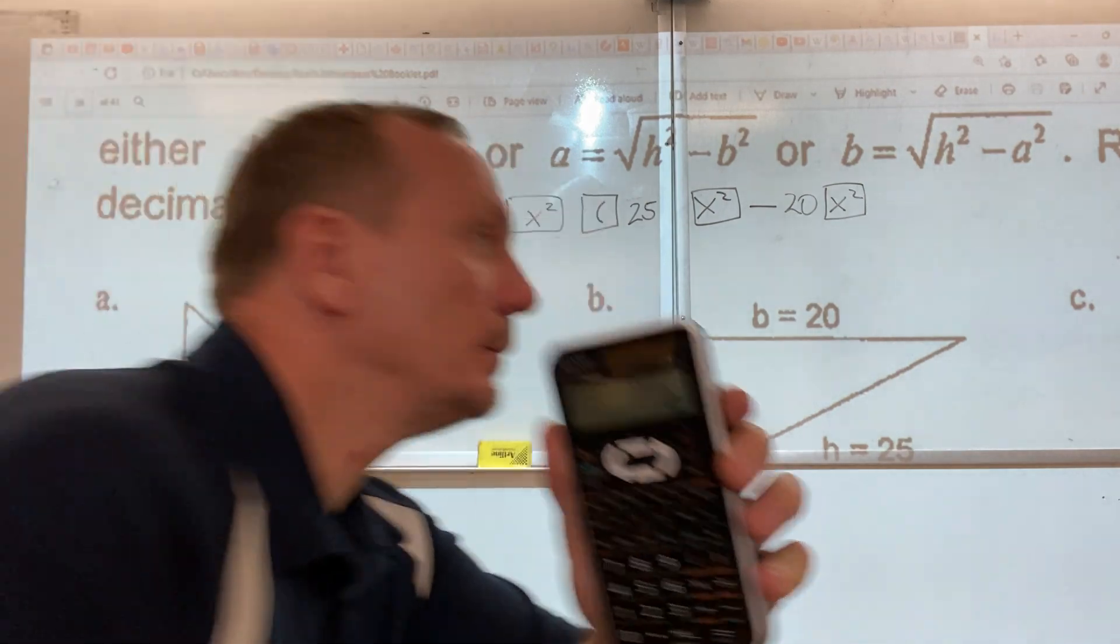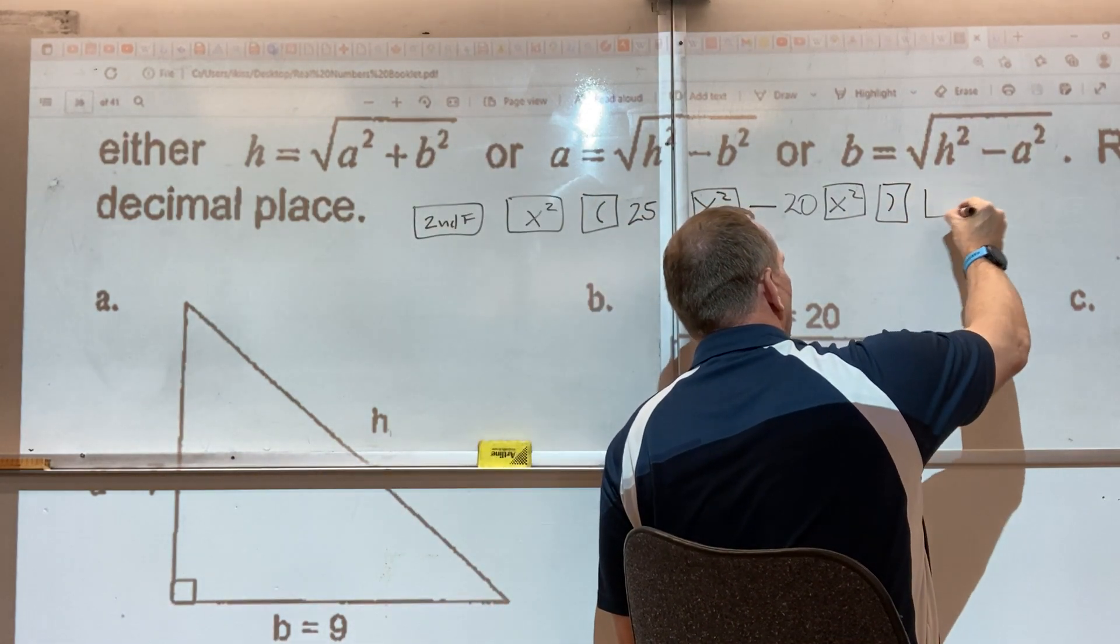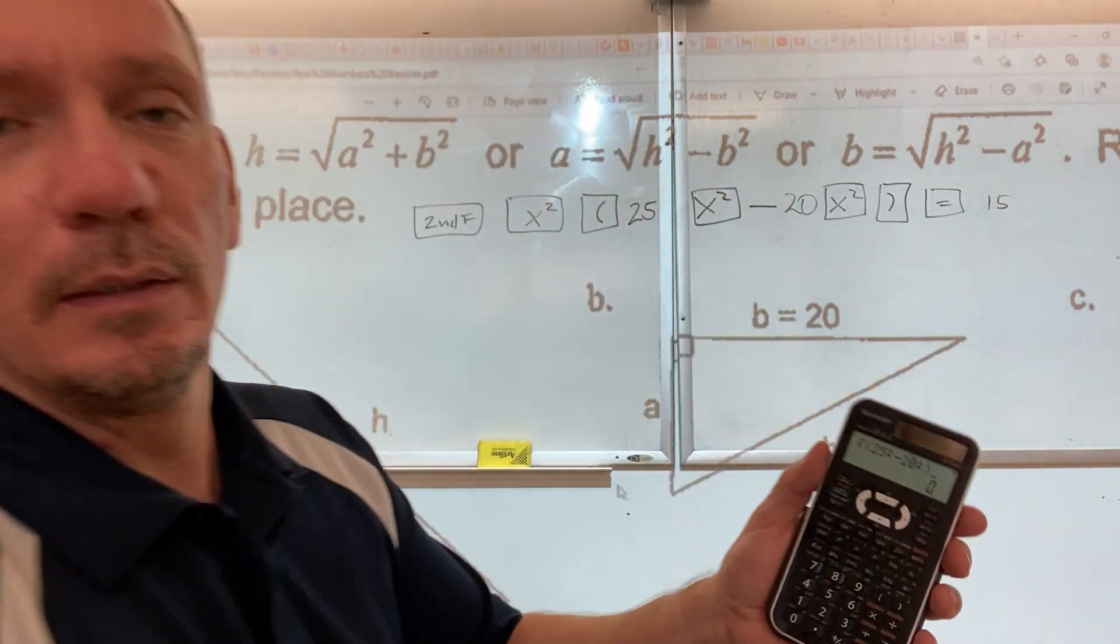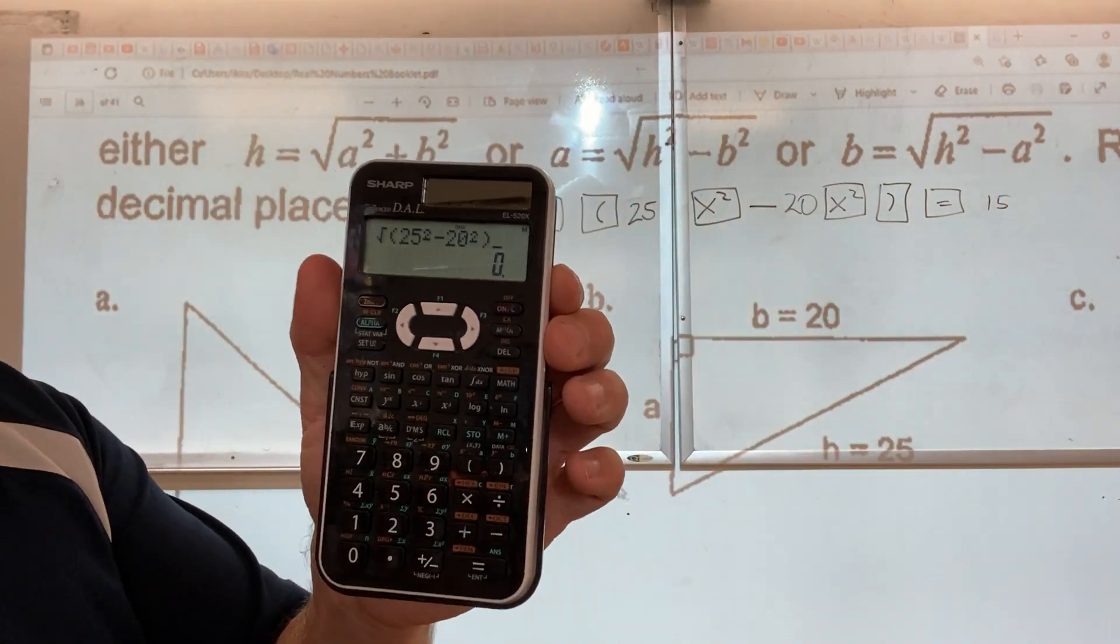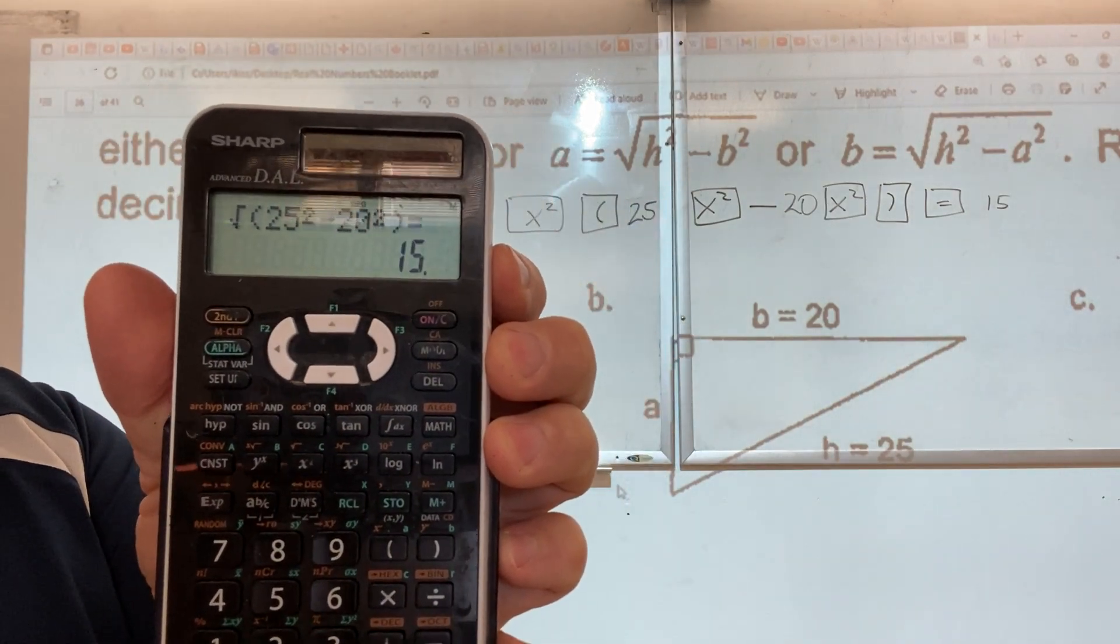Close that bracket. Close that bracket and press equal. When you press equals, then you better see 15 here. Let's see. Oh yeah, we're good.